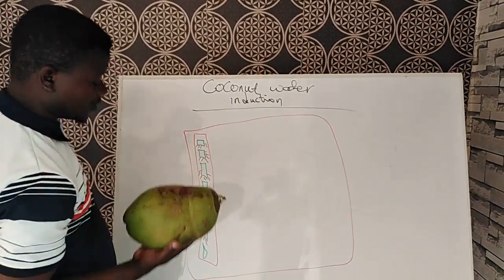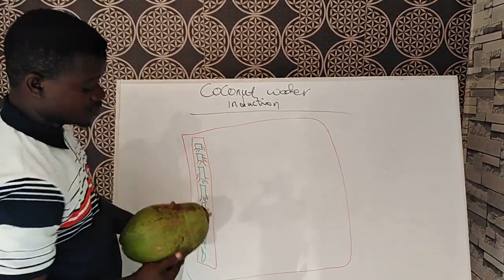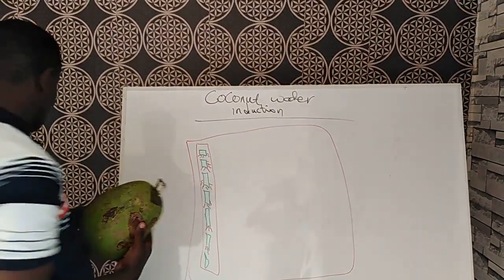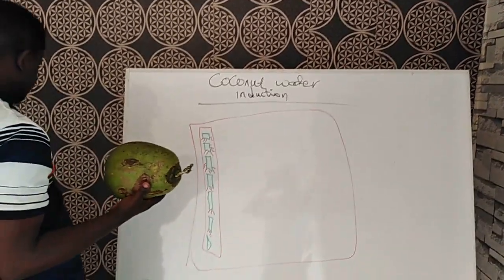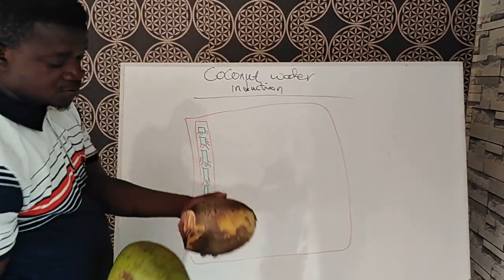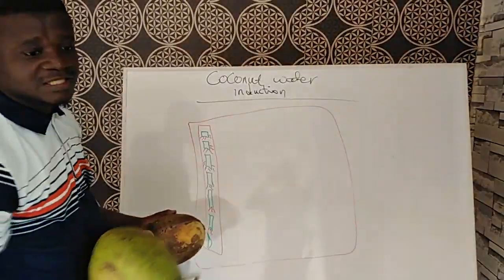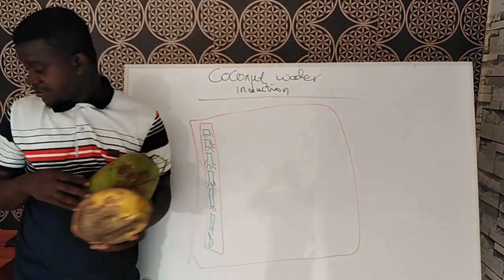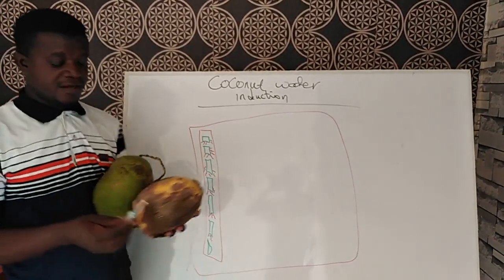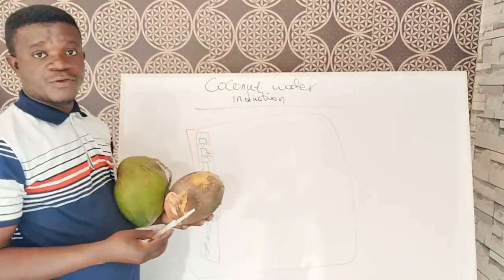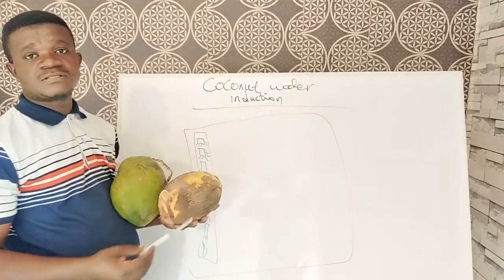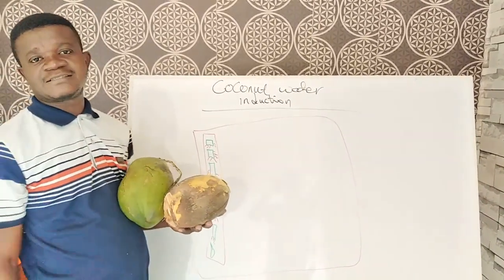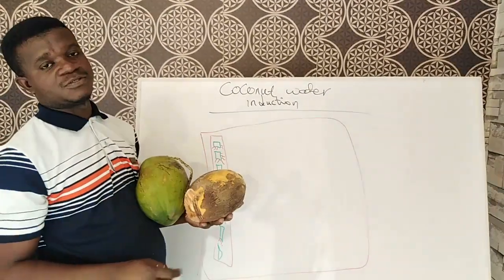We have coconuts here. We will get the water out using strings, as you can see. We get it out, we inject our cartels, and we observe the result.